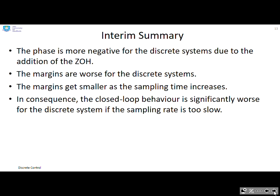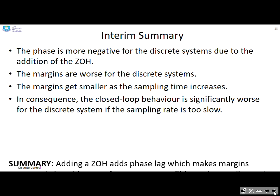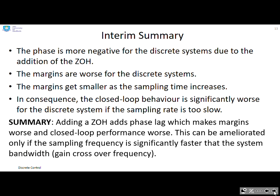So another interim summary. The phase is more negative for the discrete systems due to the addition of the zero-order hold. The margins are worse for the discrete systems, and the margins get worse still as the sampling time increases. So in consequence, the closed-loop behavior is worse for the discrete system if the sampling rate is too slow. Adding a zero-order hold is adding phase lag, which makes the margins worse and closed-loop performance worse. So we can ameliorate this only if the sampling frequency is significantly faster than the system bandwidth, and it's not always possible to make the sample rate too fast because there are other negatives.